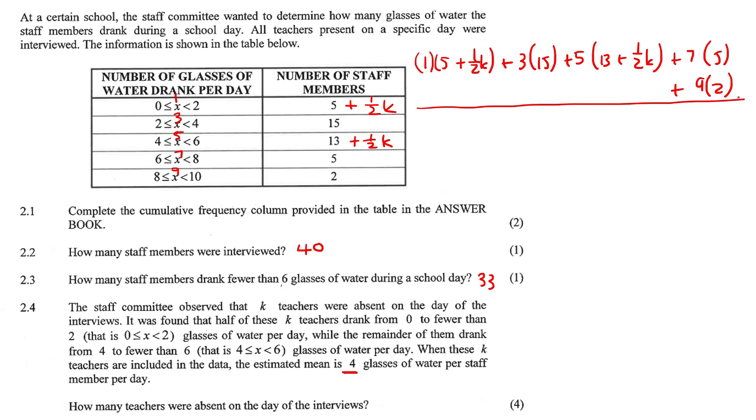Now to calculate the average, you normally divide by how many members there are. So there's 40 members originally plus another K members. So we can say 40 plus K. And we know that the average should be equal to 4. Okay, so let's just neaten this up a little bit.